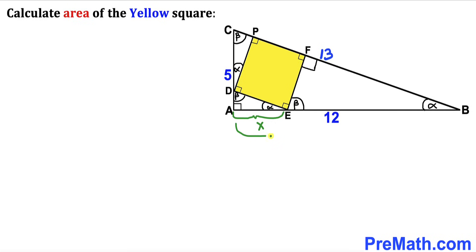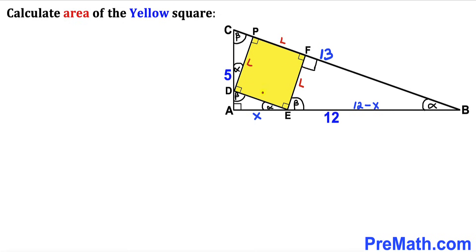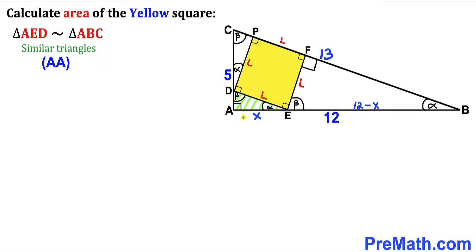Here's our next step: let's assume that this side length AE is x units. This whole side length is 12, so therefore side length EB is going to be 12 minus x. Now let's assume that the side length of this yellow square is l. Then all the side lengths are going to be l as well, since a square has all congruent sides. Our task is to calculate the value of l before we can calculate the area of this yellow square.